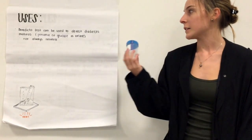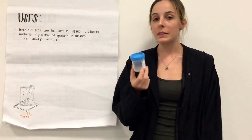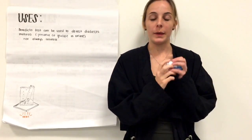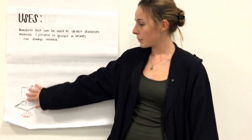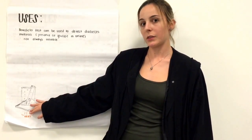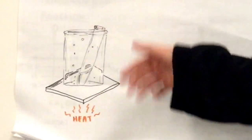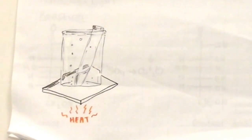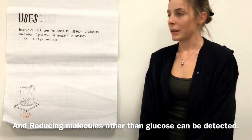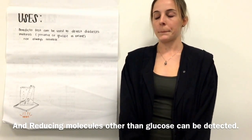Benedict's test can be used to detect diabetes mellitus with the presence of glucose in urine. It's not always reliable though because within the test you must heat up your sample, which can break the glycosidic bonds. In sucrose, for example, when it's heated up, the glycosidic bonds are broken. It's changed to a different molecule, which does reduce Benedict's reagent. So that's why the test isn't always reliable.